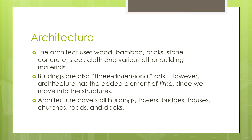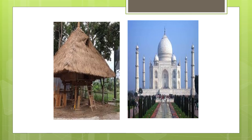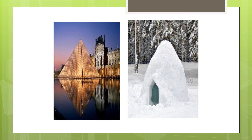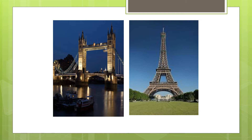The architect uses wood, bamboo, bricks, stone, concrete, steel, cloth, and various other building materials. Buildings are also three-dimensional arts; however, architecture has the added element of time since we move into the structures. Architecture covers all buildings, towers, bridges, houses, churches, roads, and docks. Examples include local materials for the Bahay Kubo, marble for the Taj Mahal, glass for the Louvre pyramid, ice for igloos, concrete for the London Bridge, and steel for the Eiffel Tower.